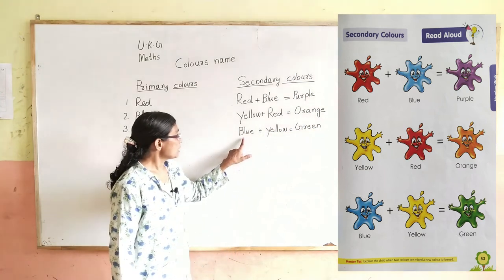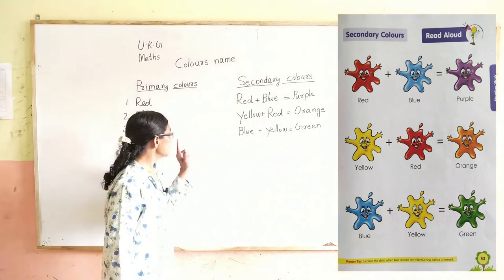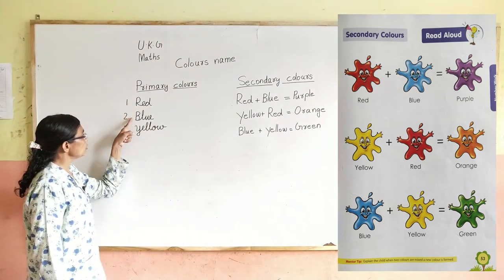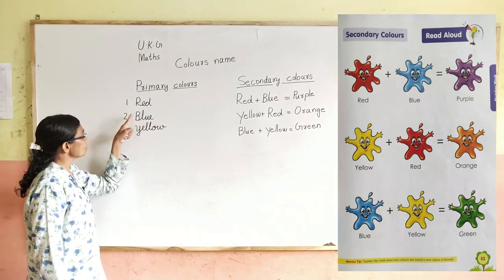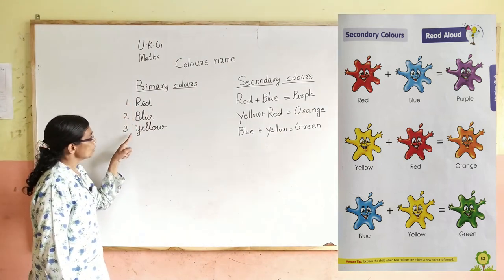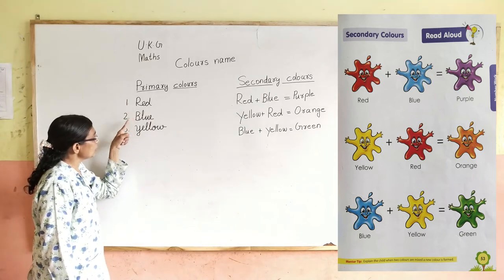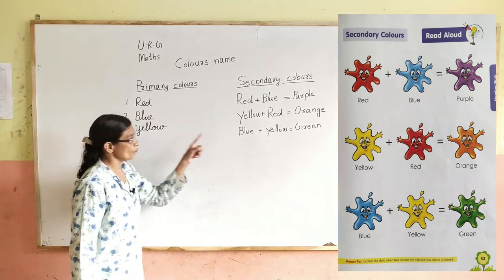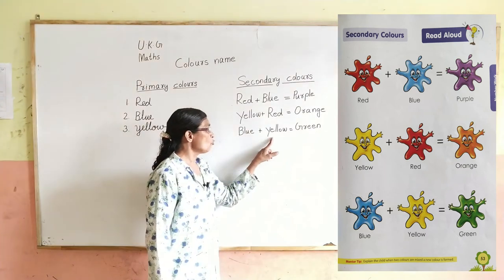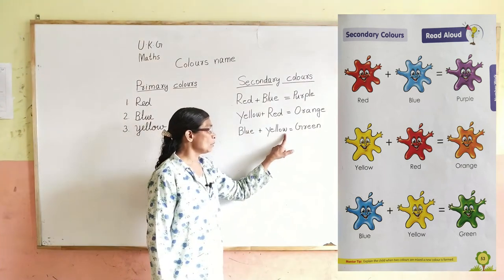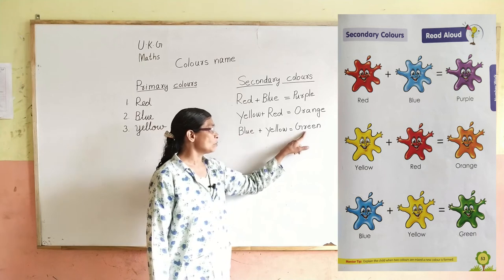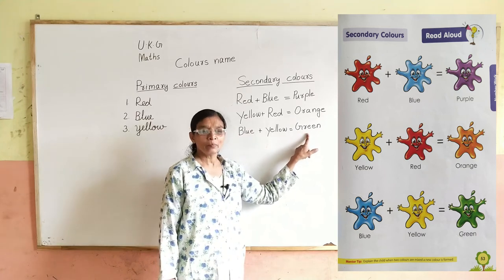Next, blue and yellow. First, we mix red and blue. Then red and yellow. We mix yellow and blue — we mix these two. Y.E.L.L.O.W. — Yellow. If we mix these two, then we get green color.